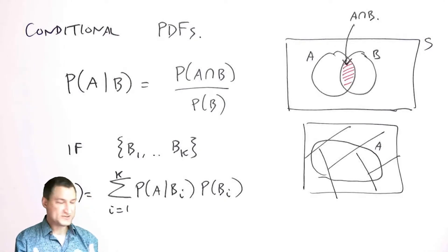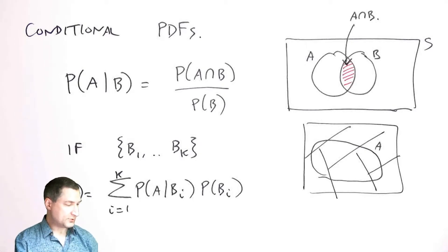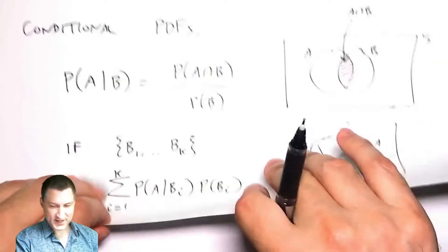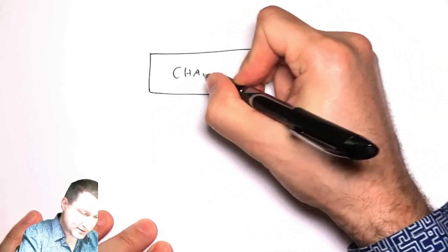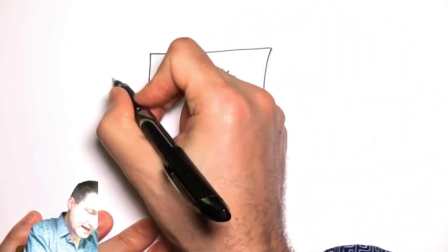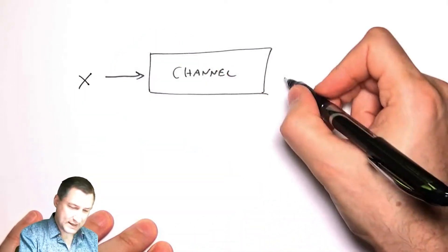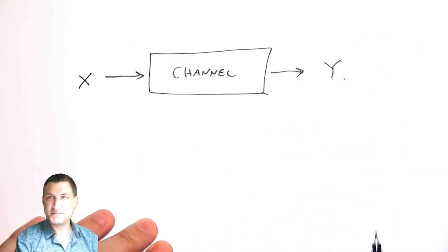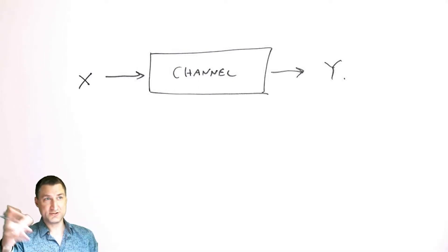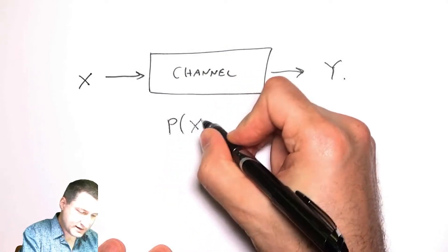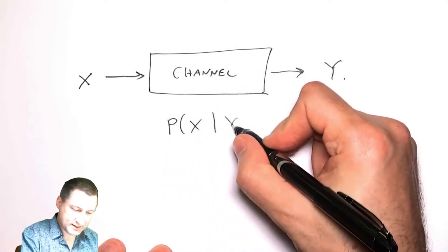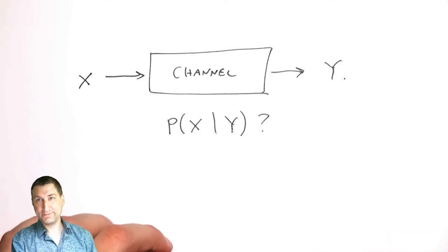Now that we've talked about joint random variables, we can revisit these ideas — instead of looking at events, I'm looking at things involving different random variables. For example, in a communications channel application, I have a channel, I put data in, and stuff comes out, but it may not be exactly what I put in because of noise and transmission errors. So I want to know: what is the probability that X went into the channel given that what I observed was Y?